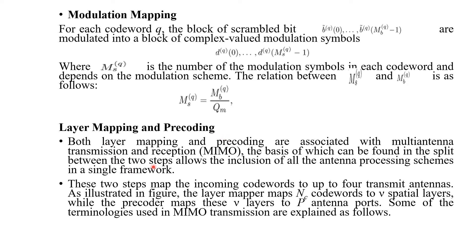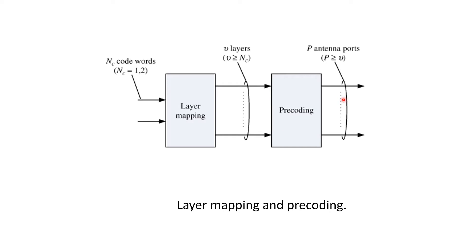Layer mapping and precoding are both associated with multi-antenna transmission and reception. These two steps map the incoming codewords to up to four transmit antennas. The layer mapper maps N_C codewords into V spatial layers, while the precoder maps the V layers to V antenna ports. All these MIMO technologies are used in MIMO transmissions.